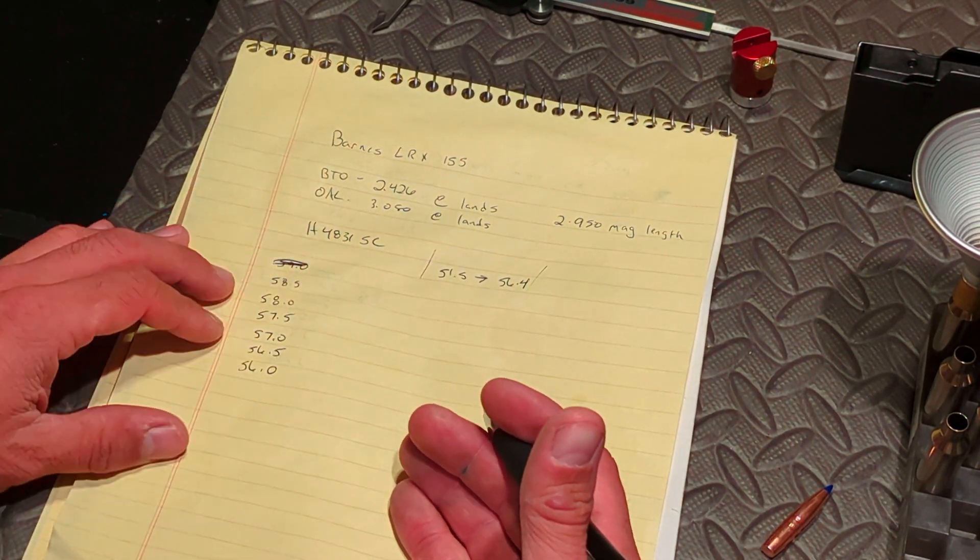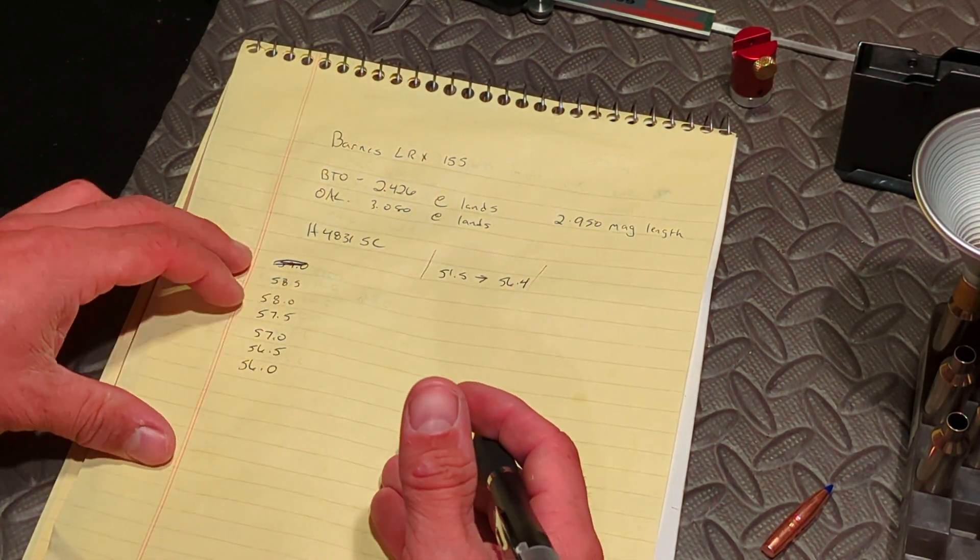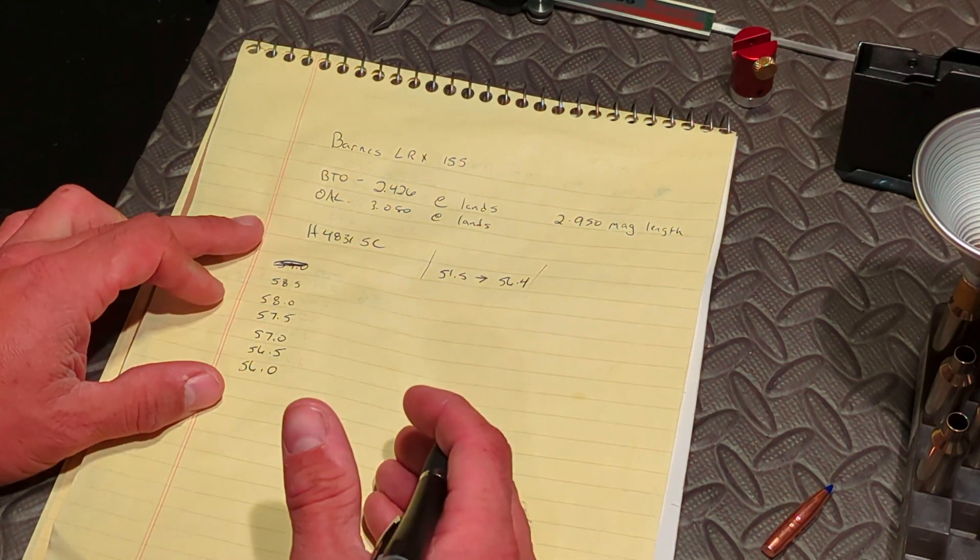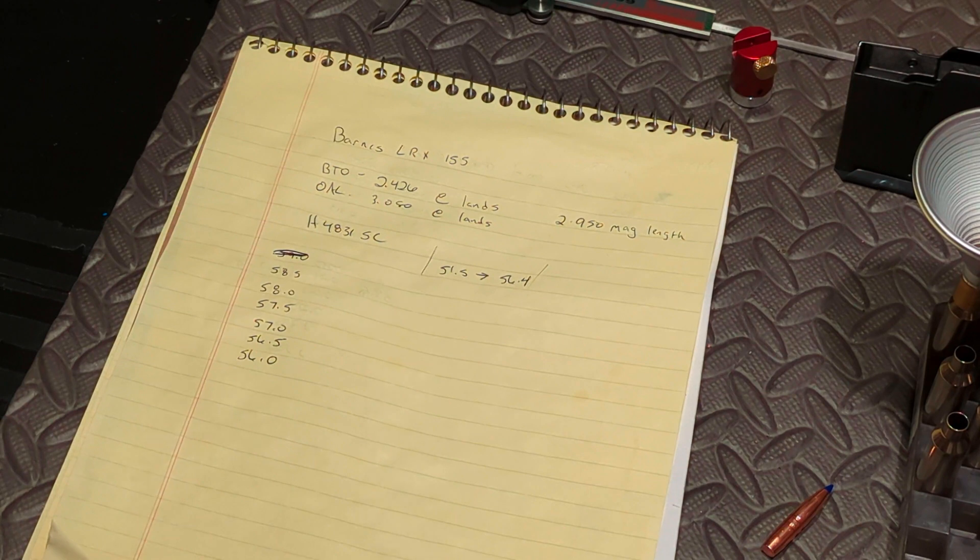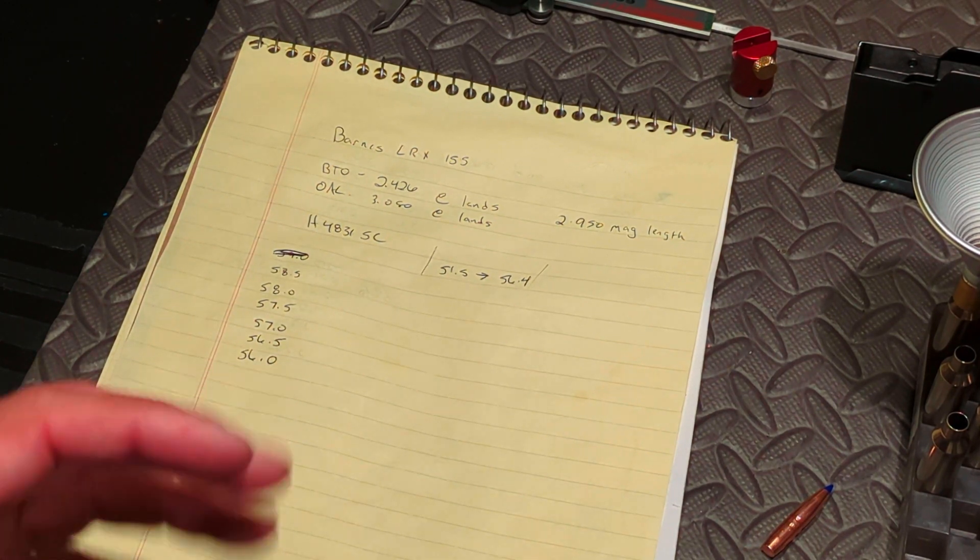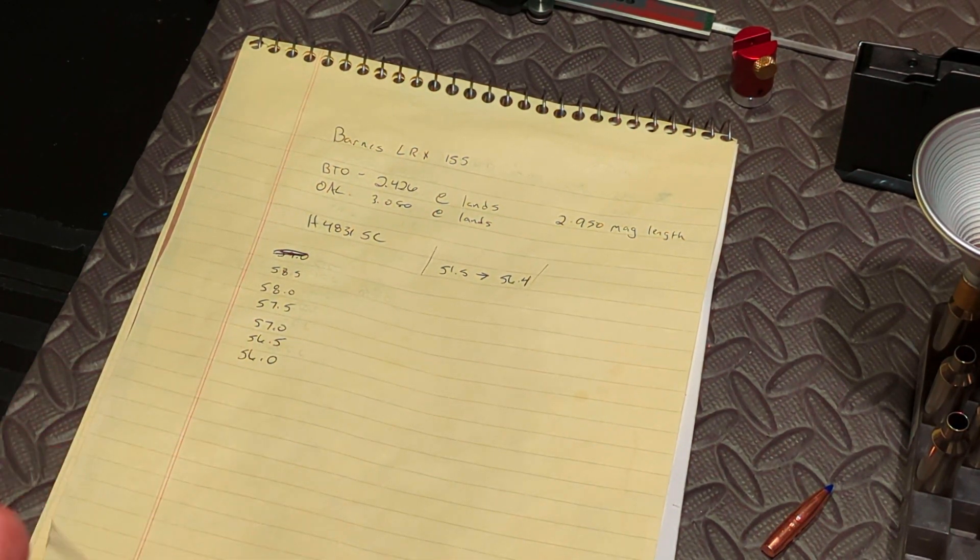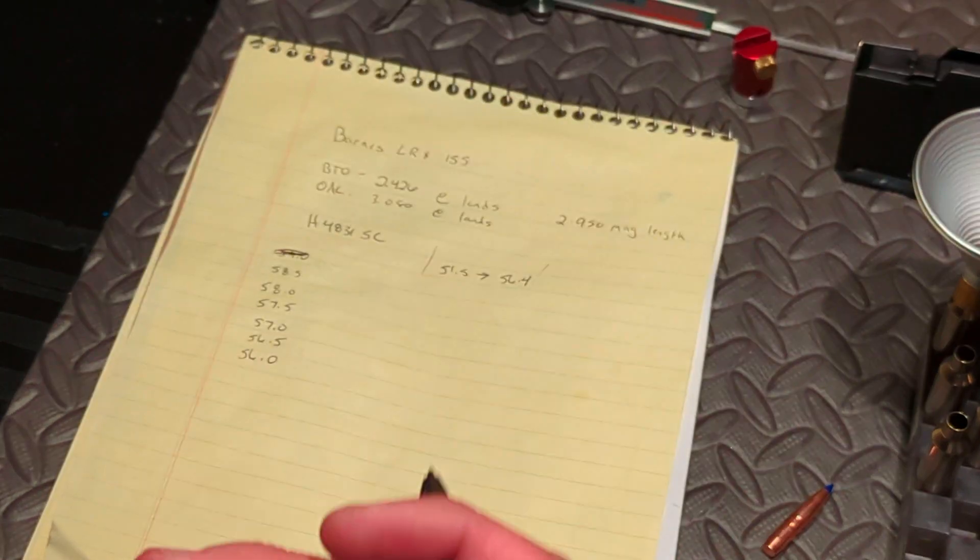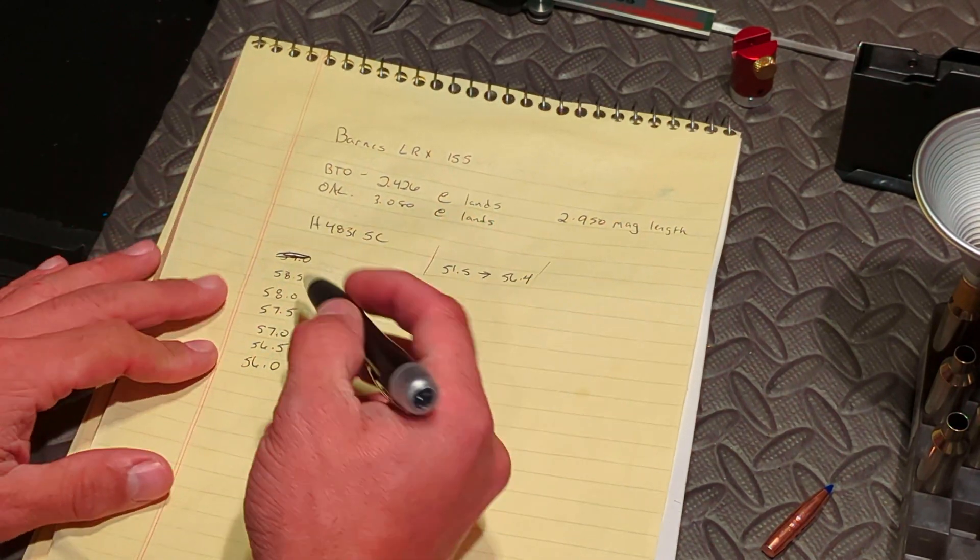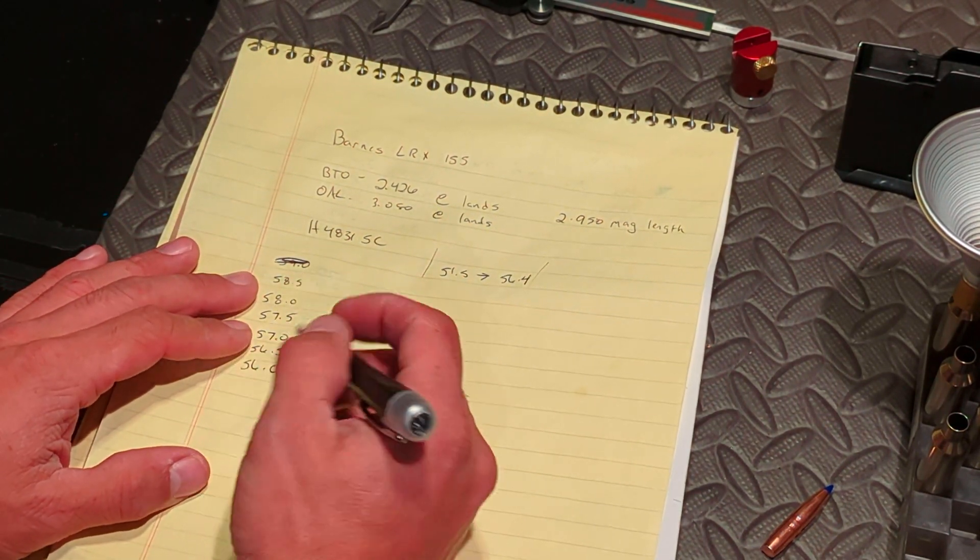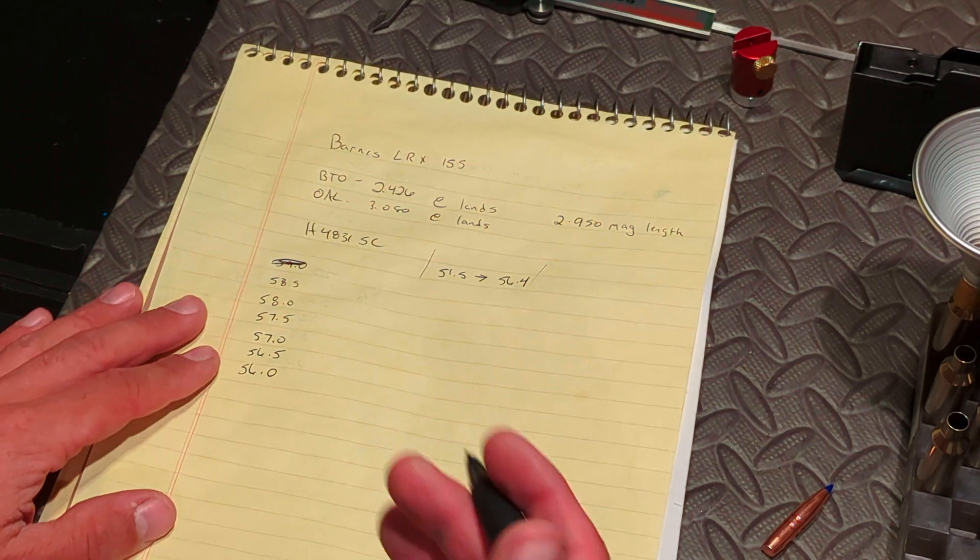I was noticing with this powder that 59 to like 60, 60 and a half grain mark, especially when I was shooting the hammer hunters, I was really overworking the brass and I was prematurely wearing out their primer pockets. So, and over time I kind of noticed my groove started opening up a little bit. So what I did is I backed my charge down to 58.5 grains. And since then everything's been a lot more consistent.